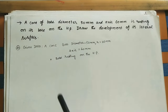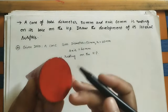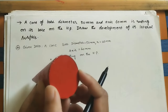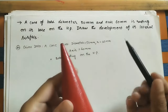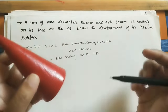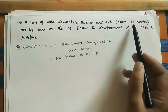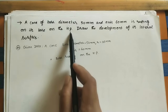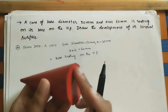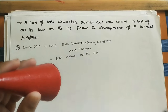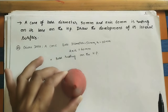First, write the given data. The cone base diameter is 50mm, or 5 centimeters. The axis — meaning the height of the cone — is 60mm, or 6 centimeters. The cone is resting on its base on the HP. The base is circular and sits on the horizontal plane like this.